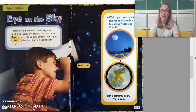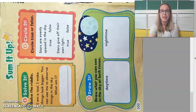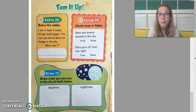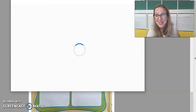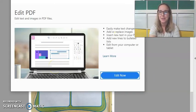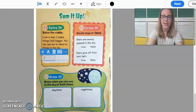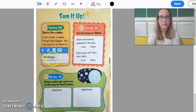Both pictures show the moon — one is far away and one is much more up close. All right, when you're finished marking your X, turn the page. Now we're going to do our sum-it-up page. It says 'Solve the riddle: I am a tool. I make things look bigger. You can use me to observe things in the sky.' What did we learn about today that's a tool that makes things look bigger? If you said telescope, you are absolutely right! I'm going to write 'telescope' on the line — T-E-L-E-S-C-O-P-E. Go ahead and write it on your line as well, and pause if you need time to write it nicely.